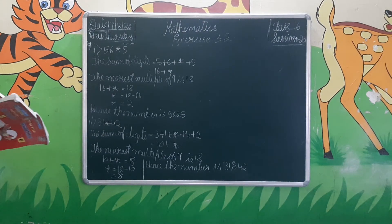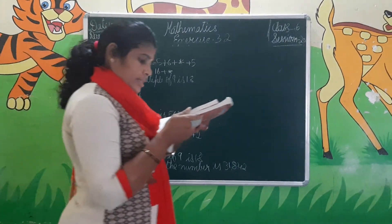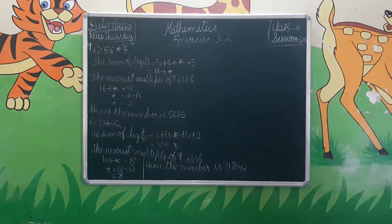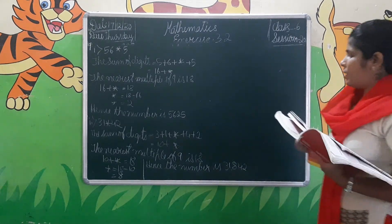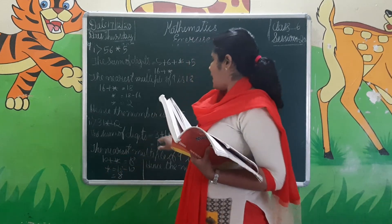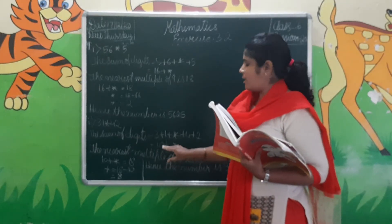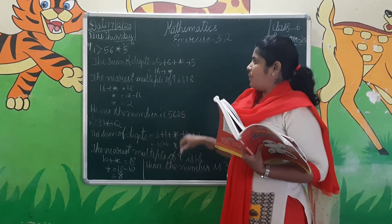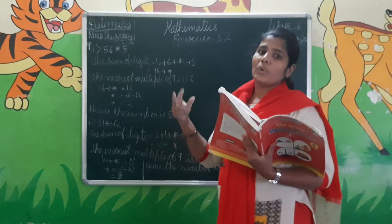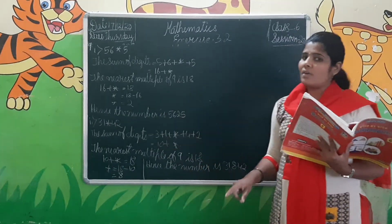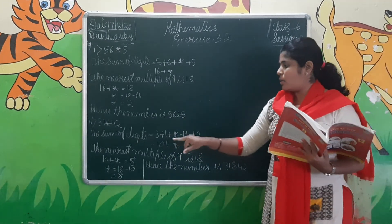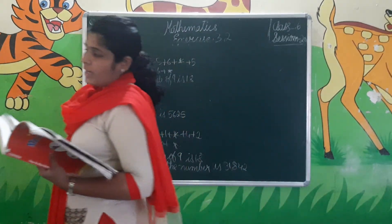The remaining 4 questions are similar — do them in the same way. Note: if the sum exceeds 18, go to the next multiple of 9 which is 27, and subtract from 27 to find the missing digit.